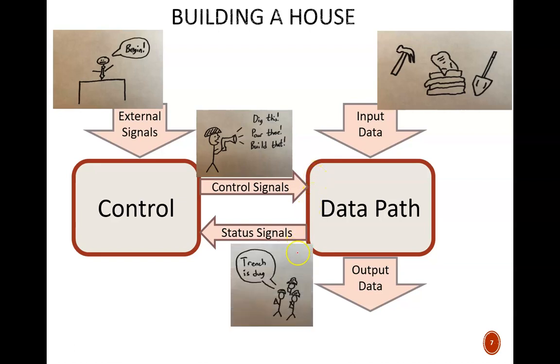Status signals are how the data path sends feedback to the control. Once the building crew finishes digging the trench, they let the foreman know so they can get the next instruction. You can see how in a multi-step process this feedback loop could be used frequently.